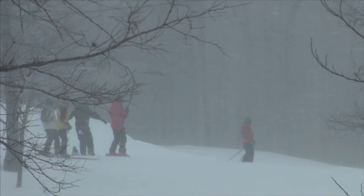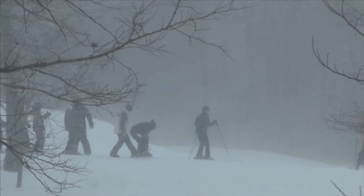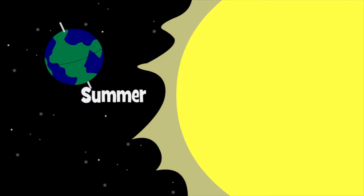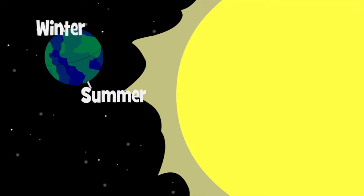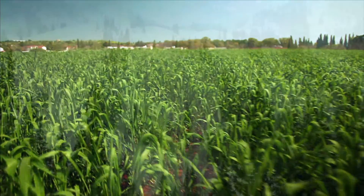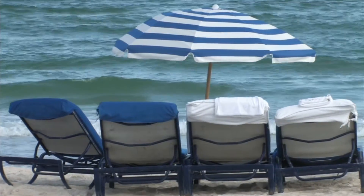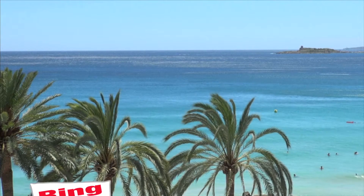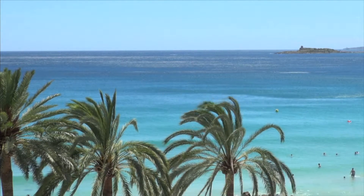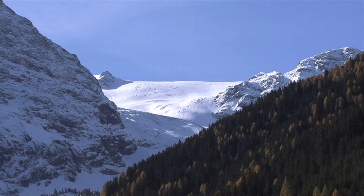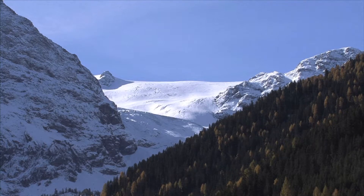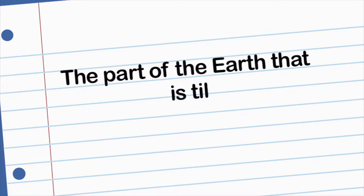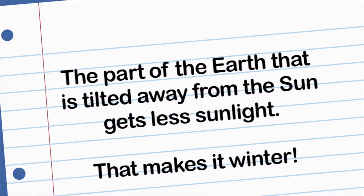With less sun, the days become shorter and weather is colder. When the south pole is tilted towards the sun, it's summer in the southern hemisphere and winter in the northern hemisphere. So, it's the sun and the tilt of the earth that cause the different seasons throughout the year. The equator is always facing the sun directly. This is why places around the equator never get very cold. The further away from the equator you get, the colder it gets. The part of the earth that is tilted away from the sun gets less sunlight, and that makes it winter.